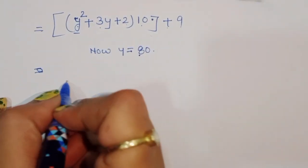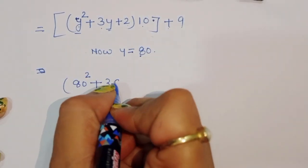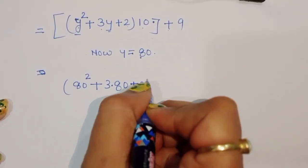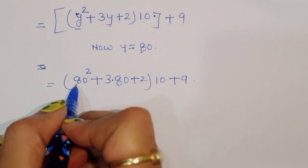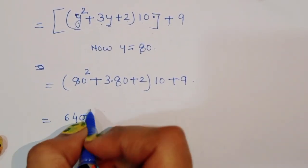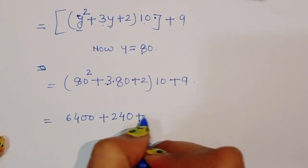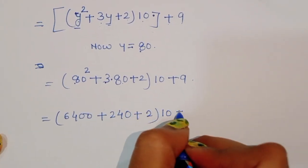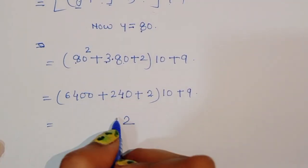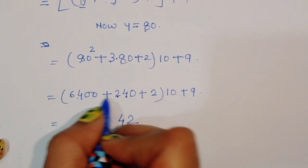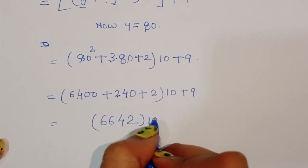We substitute y equal to 80 here. So we get 80 squared plus 3 times 80 plus 2, times 10 plus 9. Now 80 squared is 6400, plus 3 times 80 is 240, plus 2, giving us 6642. So we have 6642 times 10 plus 9.